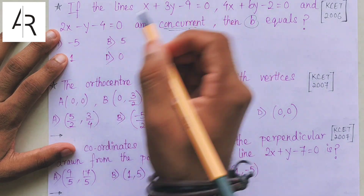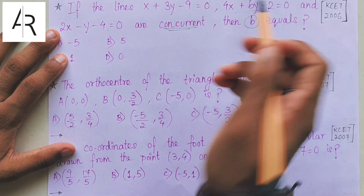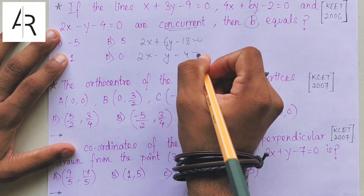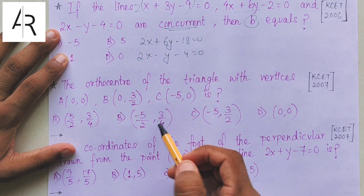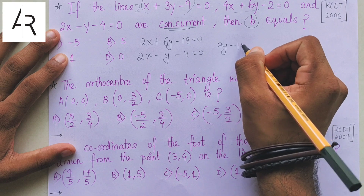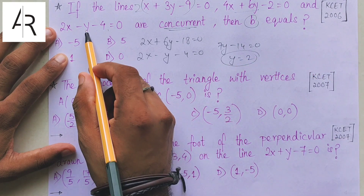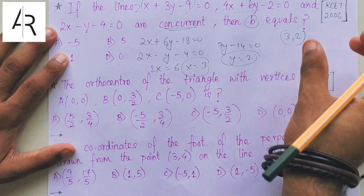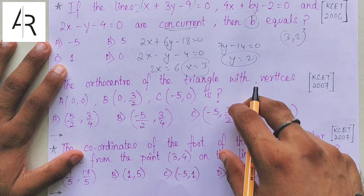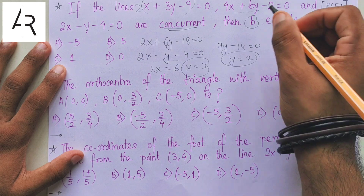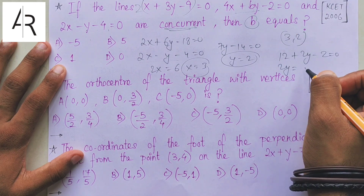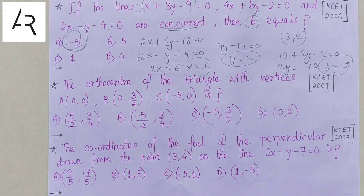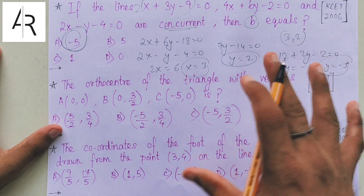The actual solution uses the determinant method, but I am teaching you a shorter trick. What you can do is solve two of the equations simultaneously and then substitute into the third. Write the first as 2x + 6y − 18 = 0 and the second as 2x − y − 4 = 0. Subtracting gives 7y − 14 = 0, so y = 2. Substituting y = 2 gives x = 3. Since the three lines are concurrent, the point (3, 2) must satisfy the third equation. Substituting gives 12 + 2B − 2 = 0, so B = −5. Our answer is −5.